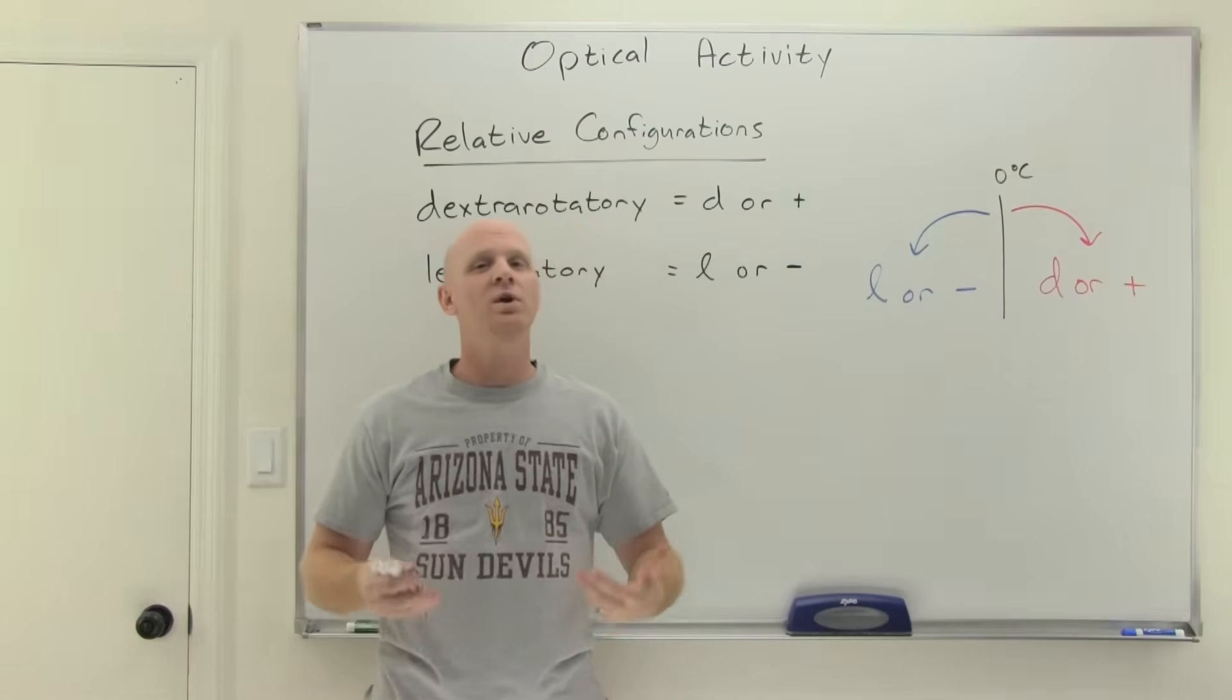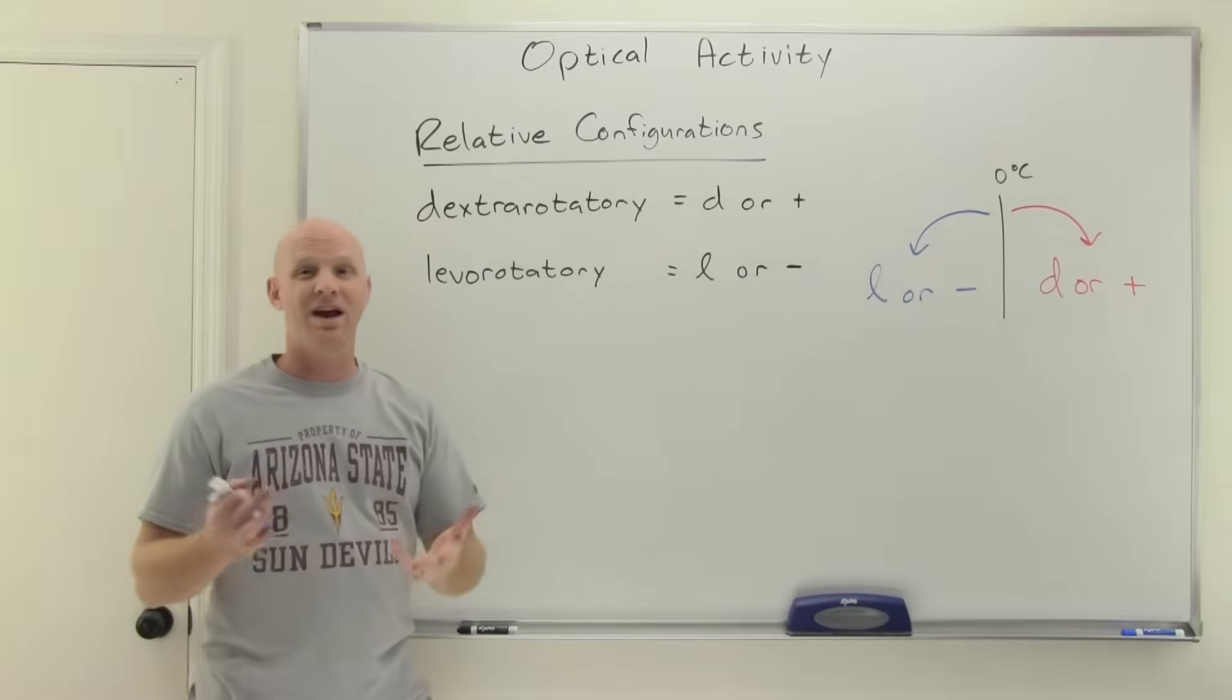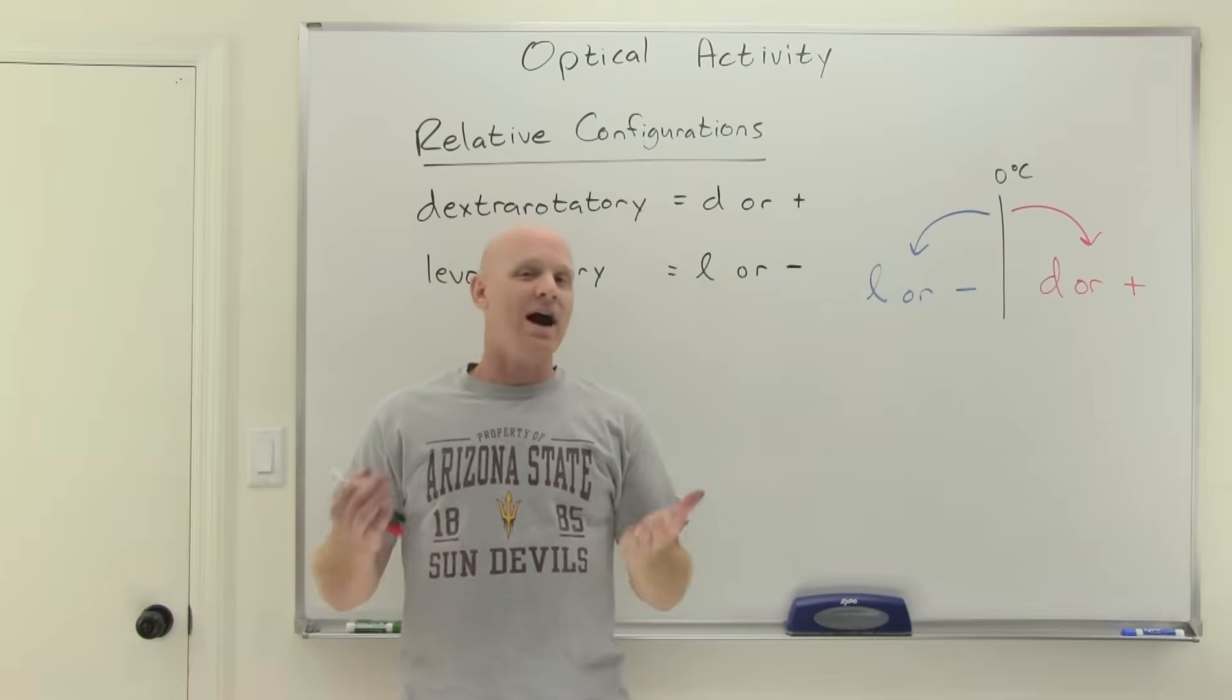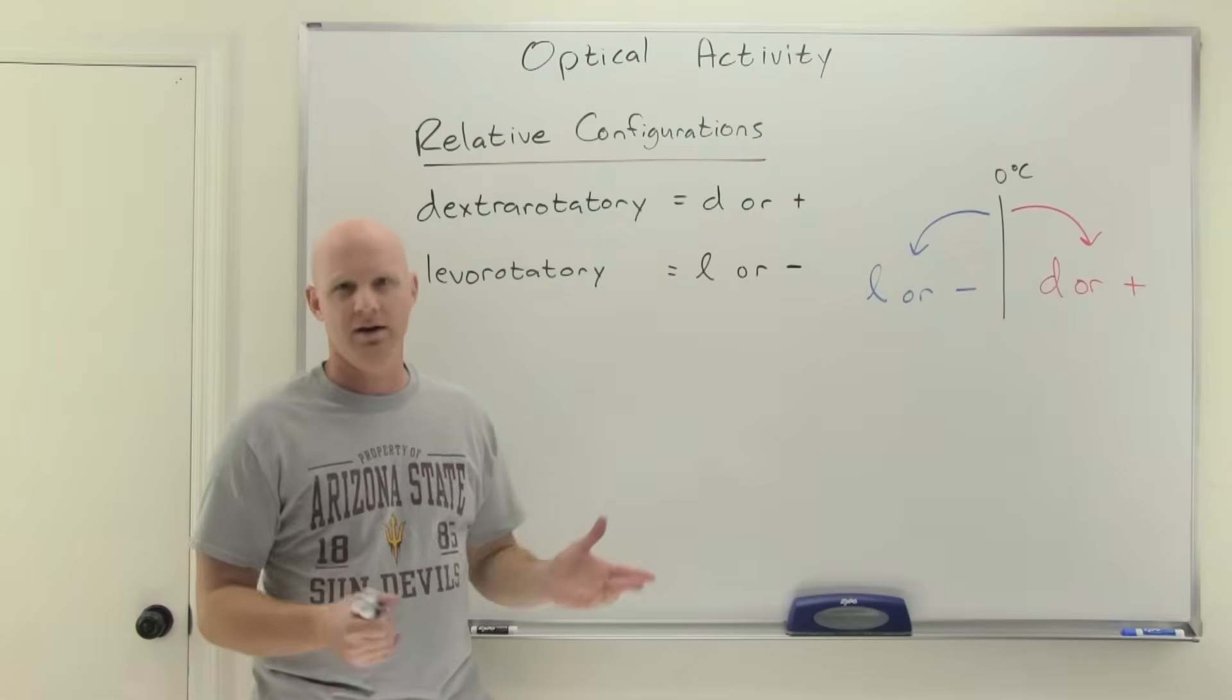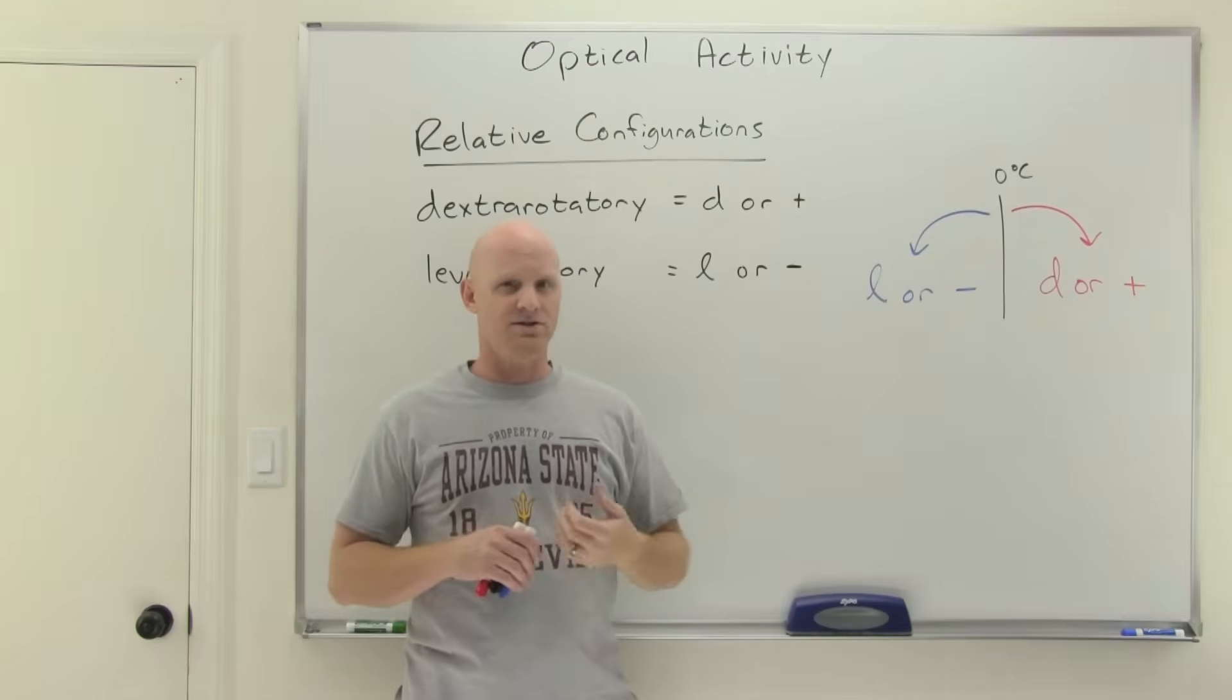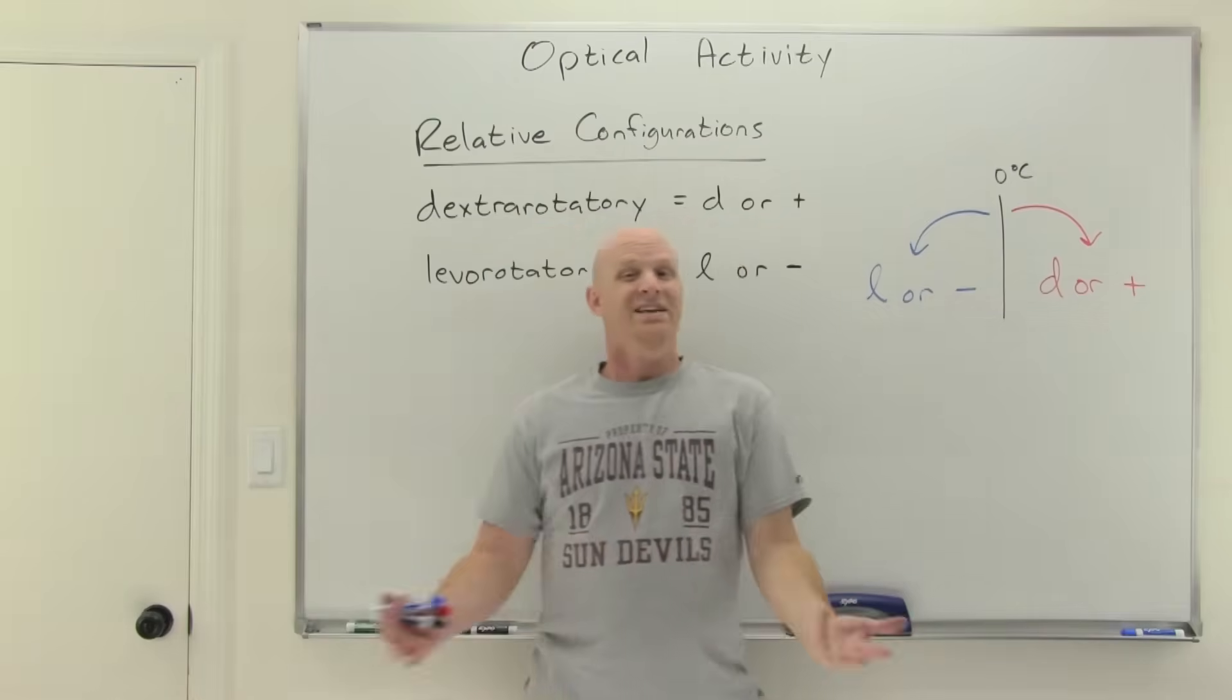Now here's the deal. One enantiomer is always going to be the D or plus isomer. And the other enantiomer is going to be the L or minus enantiomer. And here's the problem is you can't tell which one is which by looking at the structure. Notice you can figure out R and S, the absolute configurations, by looking at the structure. You can't figure out these relative configurations by examining a molecule structure. What you can do is stick that lovely compound in a solution and put it in a polarimeter. And then the polarimeter will measure which way the light gets rotated.